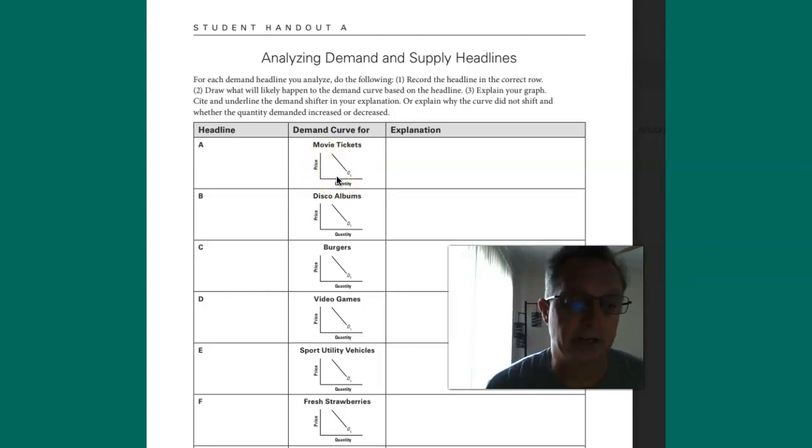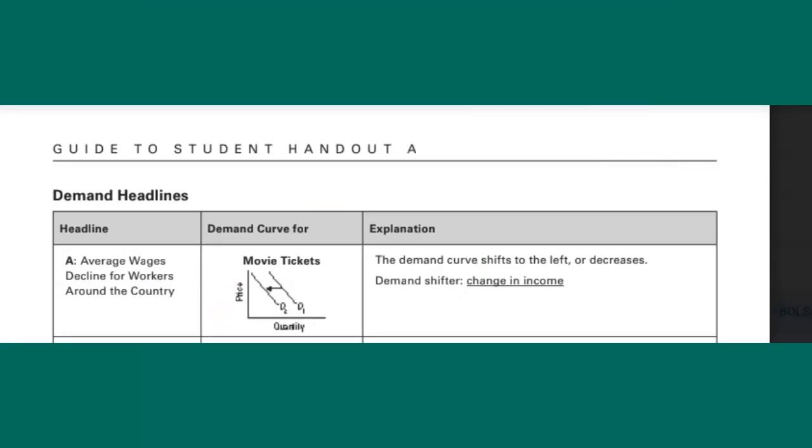And so based on that, here's what it would look like on the answer key and I'll focus just on that one. So as a result you can see what happens. You put average wages decline for workers around the country. The demand curve shifts to the left or decreases. Decrease to the left, increase to the right.